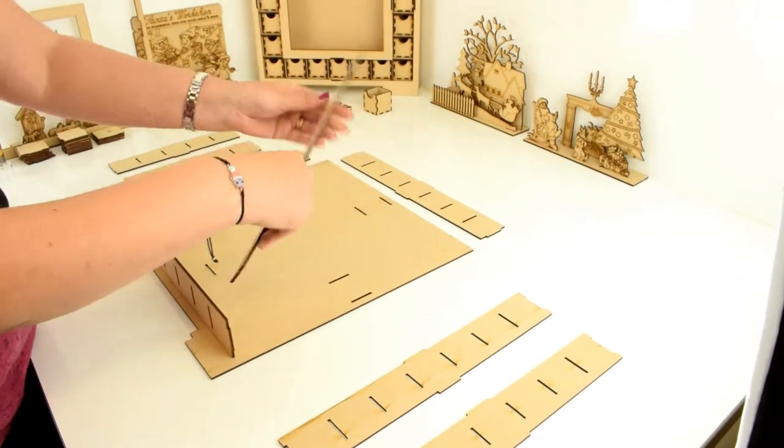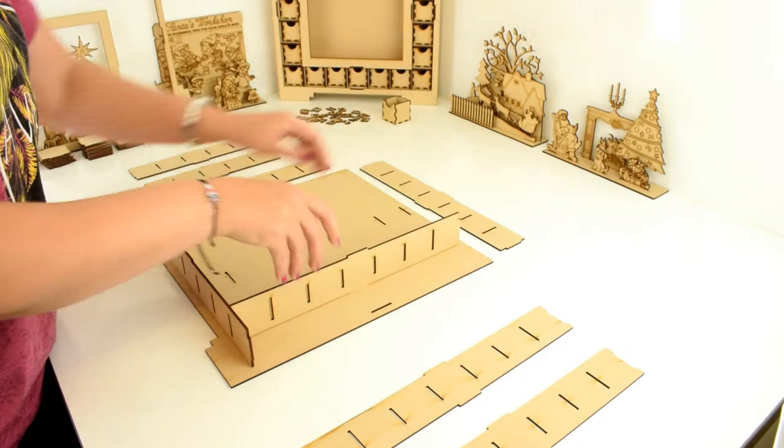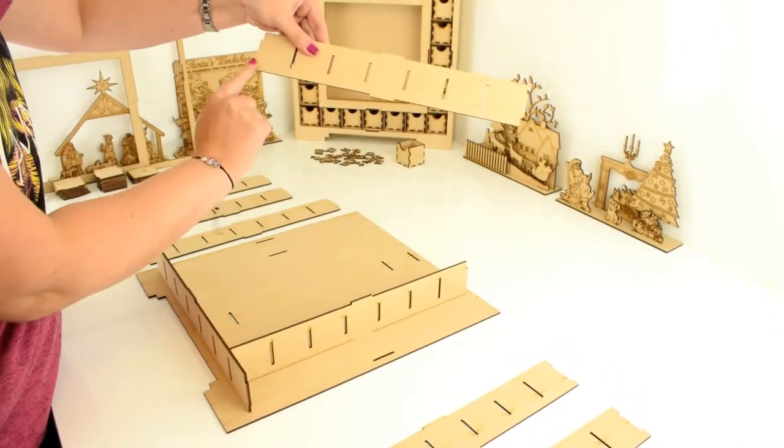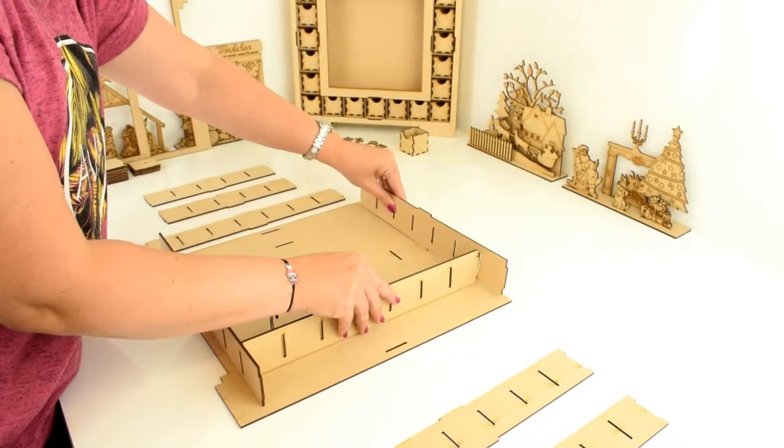Take the same piece again and slot this into the inner hole on the backboard. Same piece again with the pieces on the edges, slot this into the top hole on the backboard.